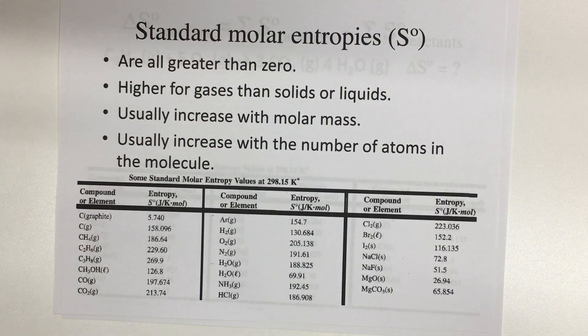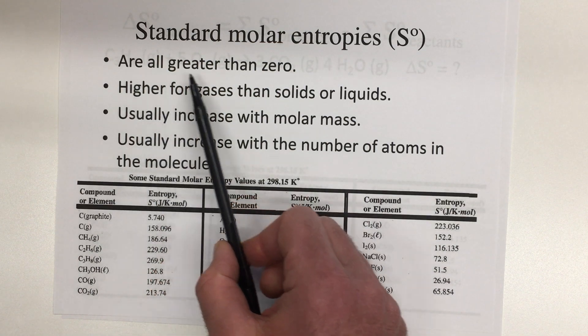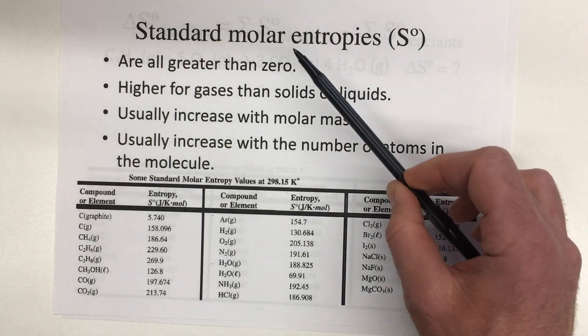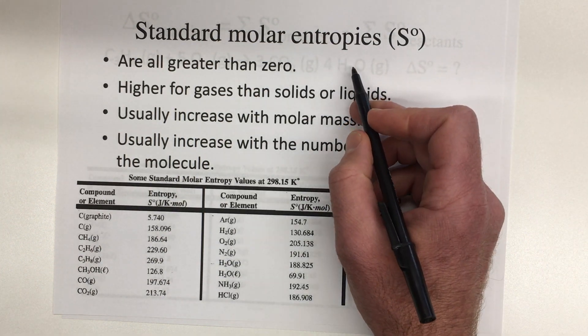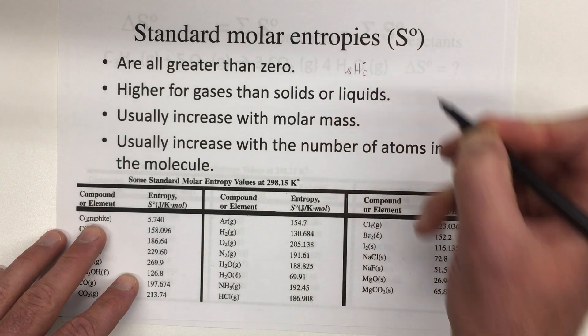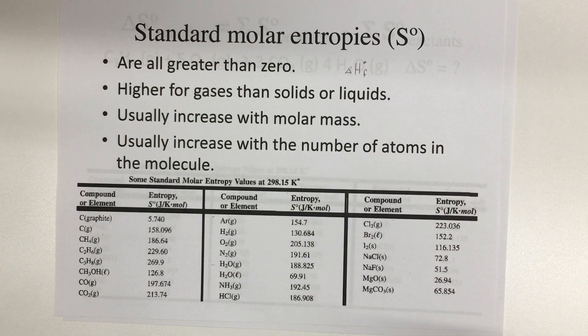So there are a list of standard molar entropies that you can look up in tables. In our book, it'll be right next to the enthalpy change, the delta H values that we've already seen. And a couple things you'll notice: these are all greater than zero. So everything has disorder. Everything with a temperature above absolute zero is going to have some amount of disorder. So in that way, it's unlike the delta H's. When we looked up the standard enthalpies of formation, we saw that those would be zero if it was just an element in its standard state.